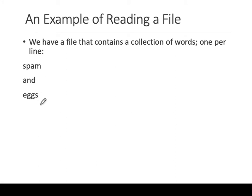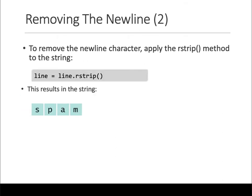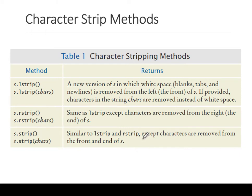'Spam' and 'eggs' — these are things written in a file, one per line. When we do rstrip, it reads the first line 'spam' and removes the backslash-n character. Then the next slide shows you there are many other methods — whether you strip from the right or from the left, etc.